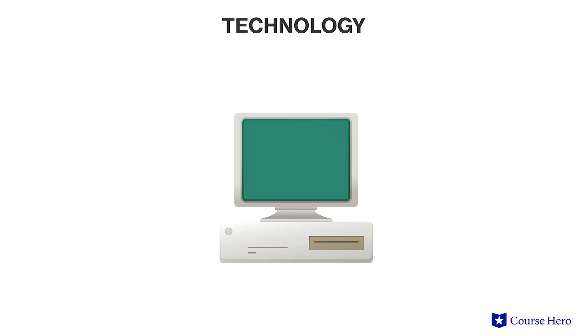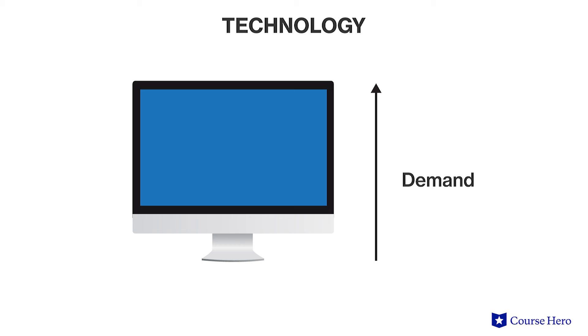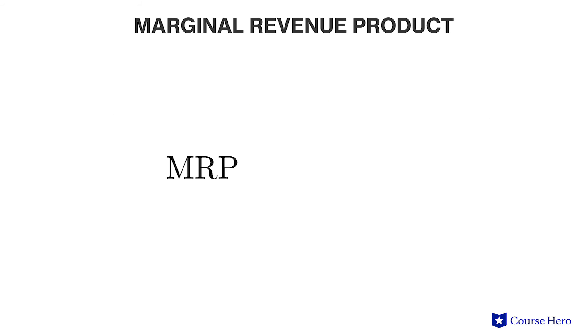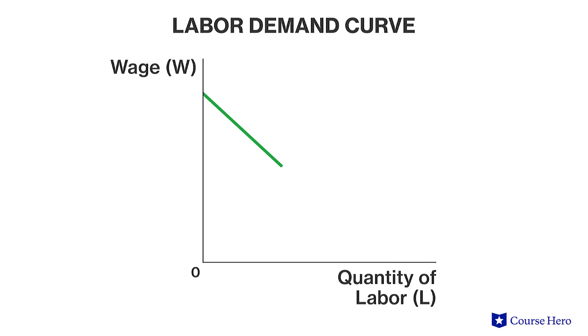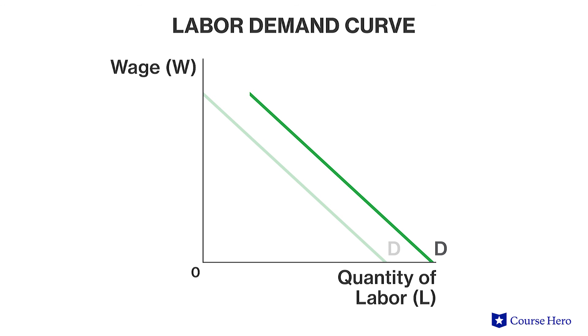Technology improvements may also shift the demand curve if they result in more productive workers, which increases the marginal product of labor. Improvements in the marginal product of labor in turn affect marginal revenue product, because marginal revenue product is the marginal product of a worker multiplied by the marginal revenue associated with those units the worker produced. Marginal revenue product can be calculated as marginal revenue times marginal product of labor. The improvement in marginal revenue product at every wage is represented graphically as an increase in the demand for labor at every wage, or a shift in the demand curve for labor to the right.